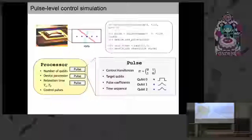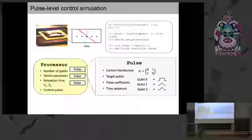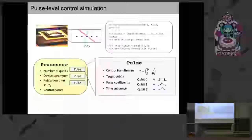You can define when to turn the pulse on and whether it has a rectangular, triangular, or even Gaussian shape. With this, you can define your device and add some pulses to it. In a short code block, you have a sigma Hamiltonian acting on qubit zero with some pulse shape, and then you run the state. Our simulator will tell you what that state looks like at some future time t.